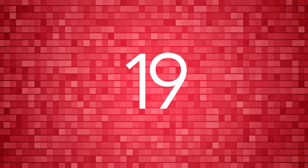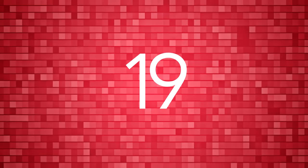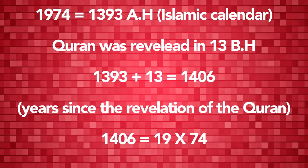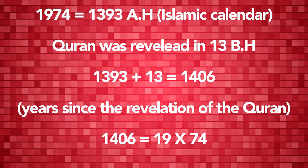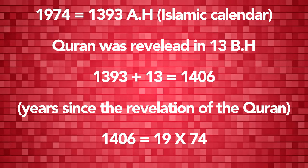One of the most fascinating things is that this mathematical miracle — this structure of the number 19 — was first published in 1974. It just happens that Surah 74 is the chapter where the number 19 is discussed. Surah 74 is entitled 'The Hidden Secret,' and in verse 30 of Surah 74 it says 'Over it is 19.' In 1974 this was discovered, and it's in Surah 74 where the number 19 is introduced.